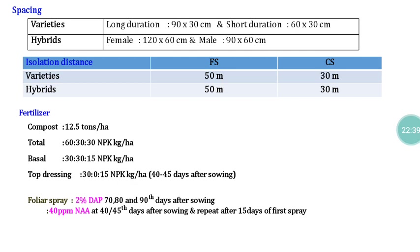Before earthing-up operations, apply 50 percent of the nitrogen and potash, then mix the soil and do the earthing-up. Regarding foliar spray: apply 2 percent DAP three times — at 70, 80, and 90 days after sowing. This is mainly because cotton is an indeterminate type of flowering crop, with continuous flowering and vegetative growth. To convert all flowers into bolls with good quality seeds, DAP must be applied three times. A major problem in cotton is boll and flower shedding.